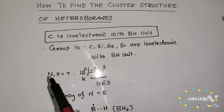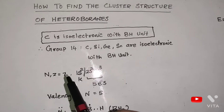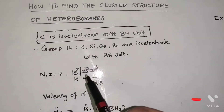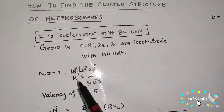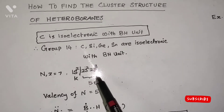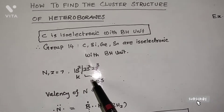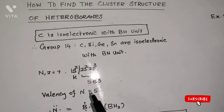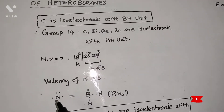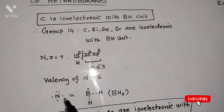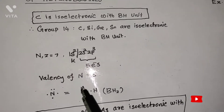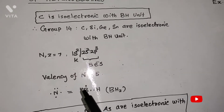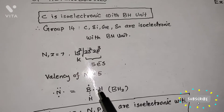The atomic number of nitrogen is 7, with electronic configuration 1s², 2s², 2p³, where 1s is the innermost orbital. Five electrons are present in the outermost orbital. Therefore, the valency of nitrogen is 5. These 5 electrons of nitrogen are isoelectronic with the BH2 unit, which also has 5 electrons.